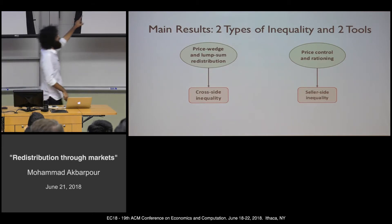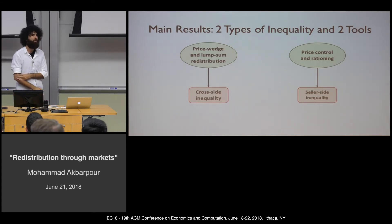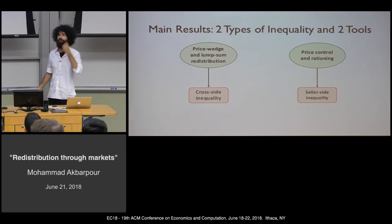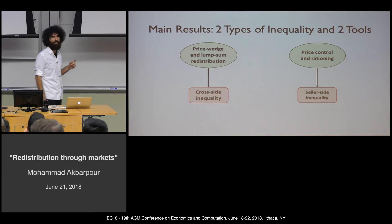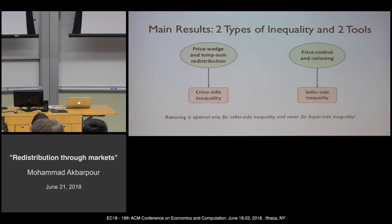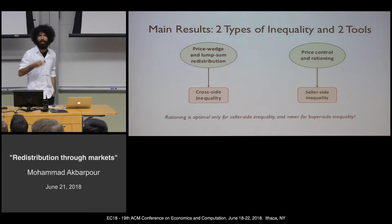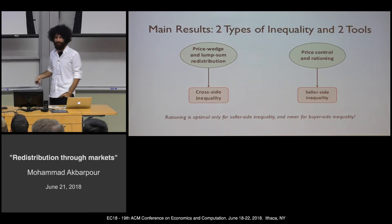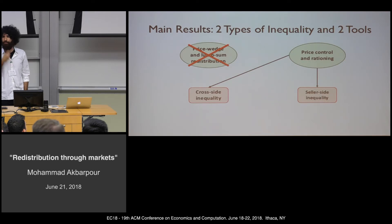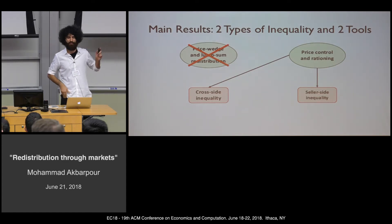The two main results are: if you have cross-side inequality—sellers poorer than buyers or vice versa—you only use price wedge and lump-sum redistribution. If you have high within-seller inequality, you use rationing. You never use rationing for buyers, because market mechanism selects the richest buyers—those willing to pay the most—so rationing cannot help poor buyers. Whereas sellers willing to sell at low prices are the poorest sellers, and rationing plus below-CE prices can help them. If lump-sum redistribution is unavailable, you can use rationing to address cross-side inequality as well.